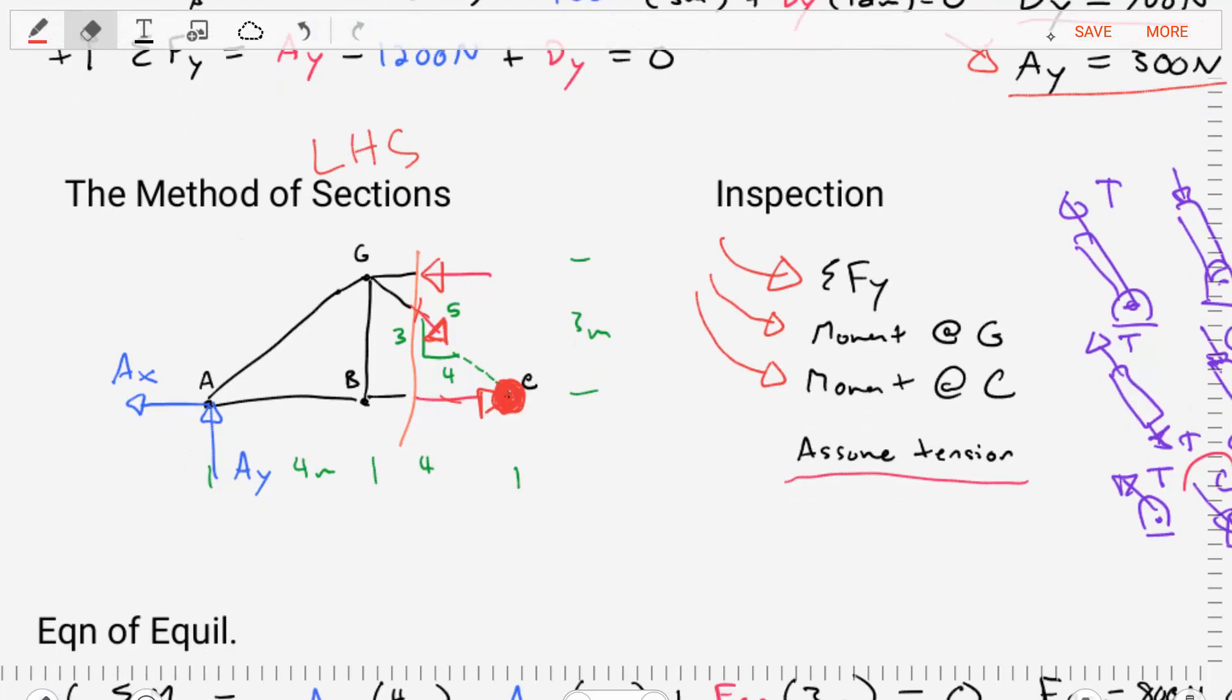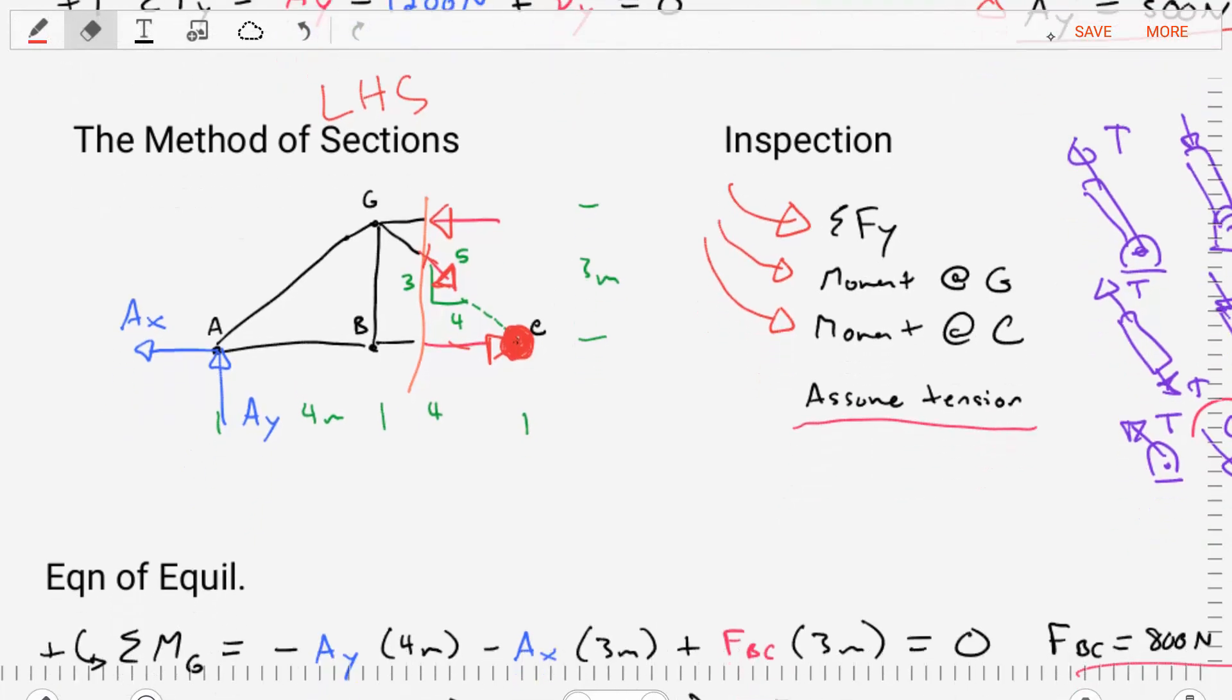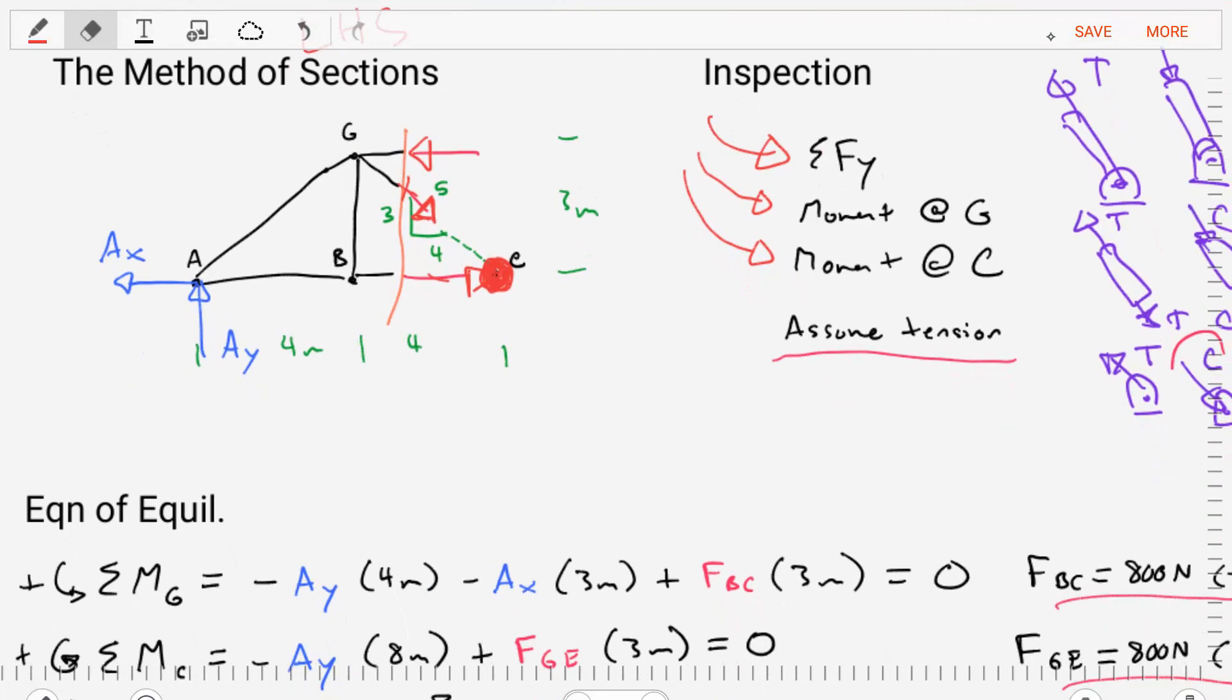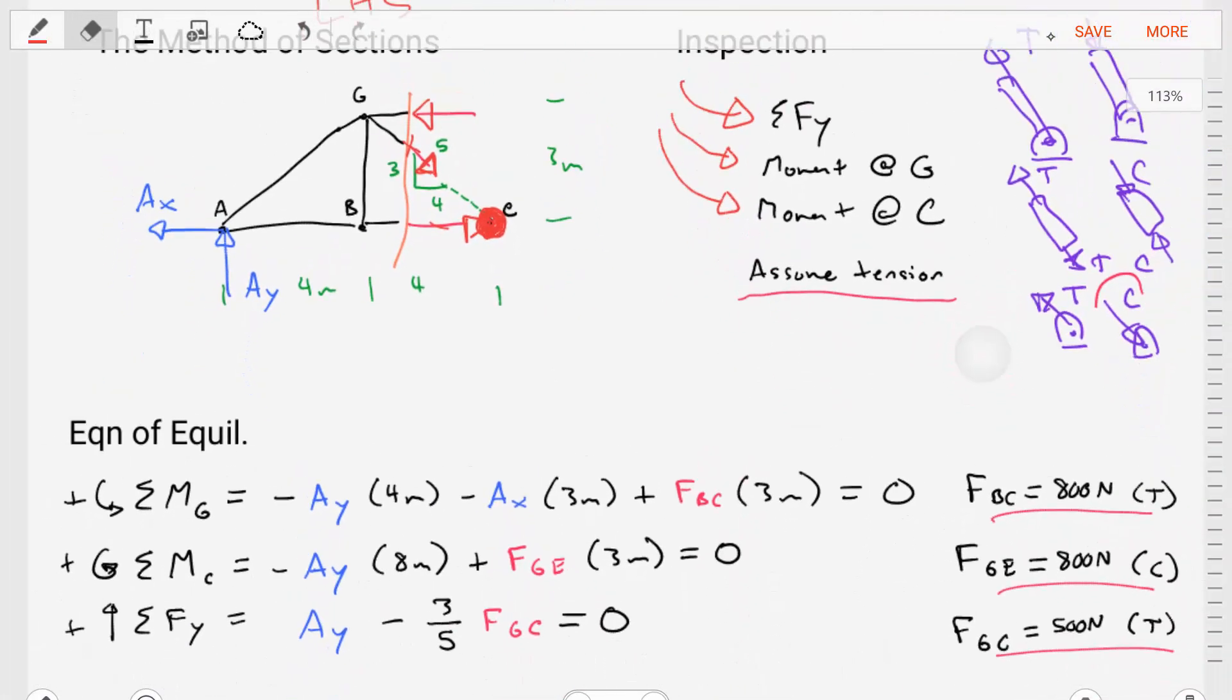So, we've applied this inspection method. We figured out the three equations. Let's go ahead and use those exact three equations. Let's start with the moment about point G. We can find the forces that are involved in their moment arms as well as their senses, and in this particular equation, the only unknown is FBC. We rearrange and solve. We'll find that FBC is equal to 800 Newtons in tension.